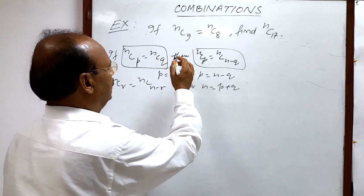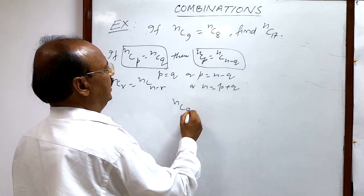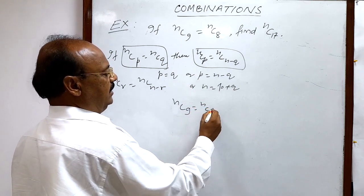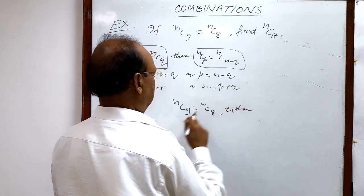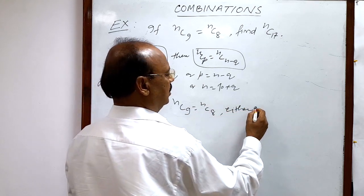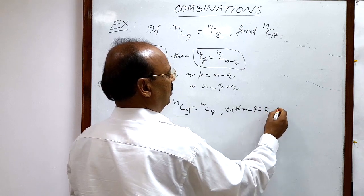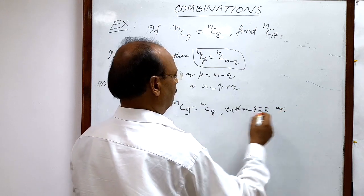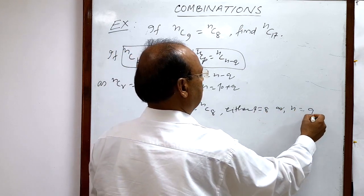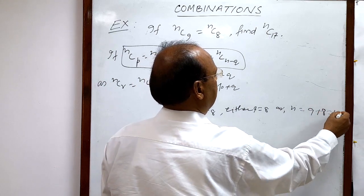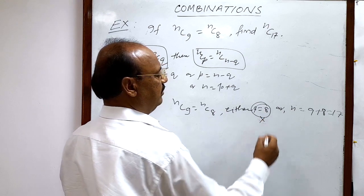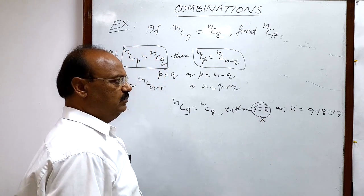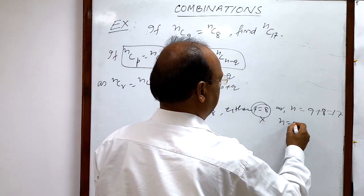Whenever we apply this result with this question, the question is nC9 is equal to nC8. So in this case, either these two values will be equal, 9 is equal to 8, or we can write n is equal to 9 plus 8, which is equal to 17. But 9 is equal to 8 is invalid, it cannot be possible. So finally we are getting n is equal to 17.